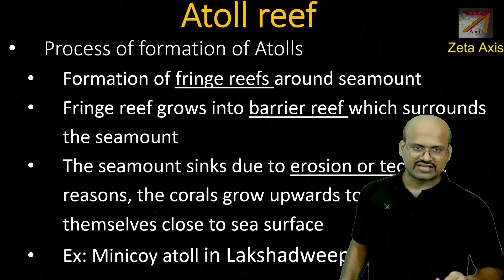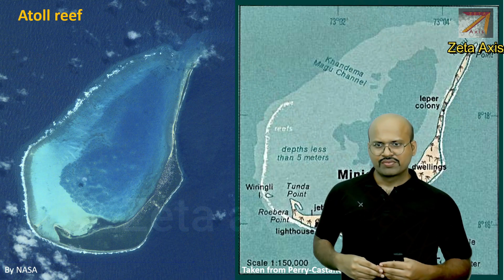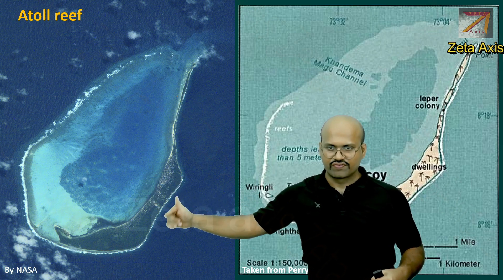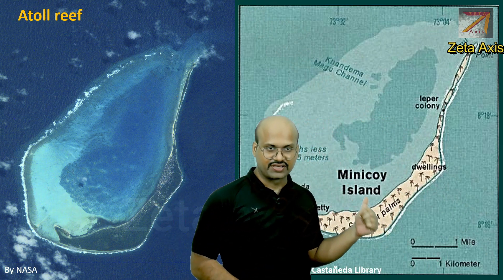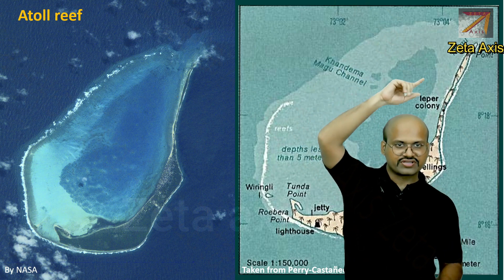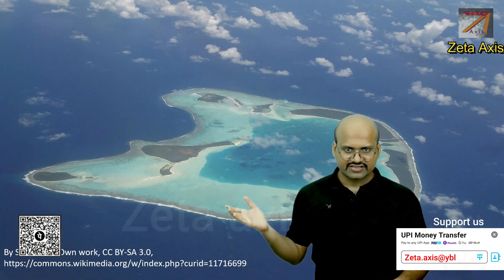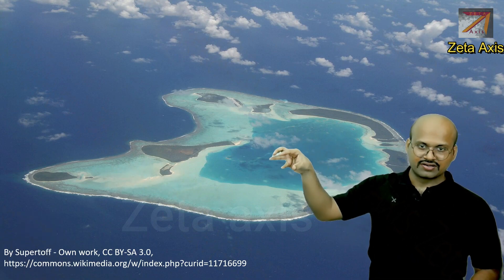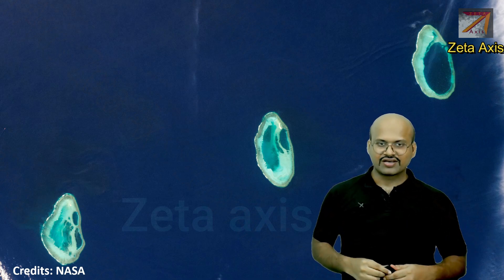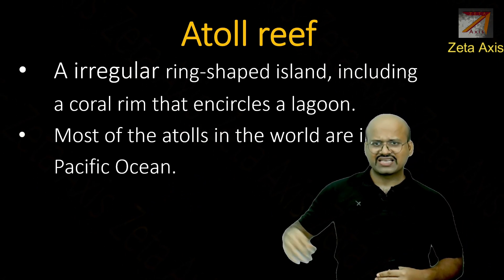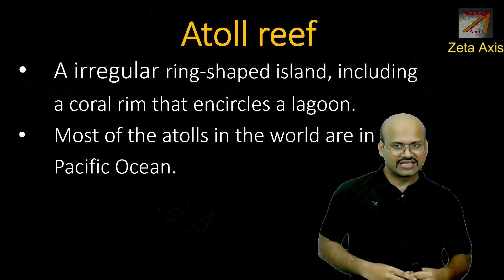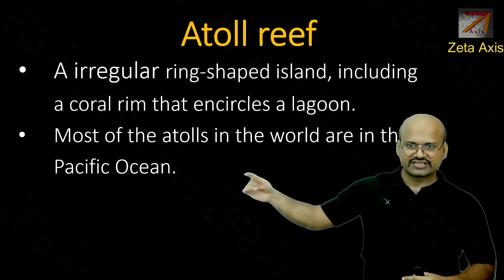Min Khoi Atoll in Lakshadweep is a very good example of an atoll reef. We can see the lagoon with an opening, surrounded by land and reef. A diagrammatic representation shows the reef completely surrounding the lagoon with coconut palms on the land. Other examples also clearly show the lagoon in the middle. Atolls are basically irregular ring-shaped islands including a coral reef with a thin coral rim and a lagoon in between. Most of the atolls in the world are present in the Pacific Ocean.